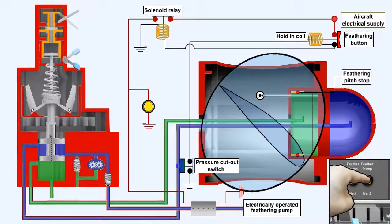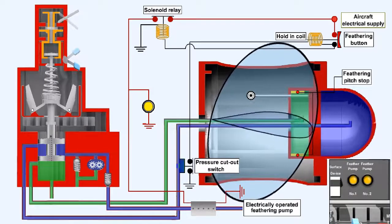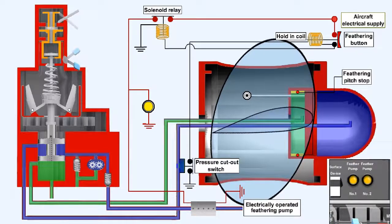The feathering button in the cockpit is pushed in, energizing the feathering pump solenoid relay to supply the feathering pump. It also energizes the hold-in coil, which keeps the feathering button depressed for the time being. Feathering oil now passes through the ports of the landed valve, pushing the pitch change piston so that it moves into contact with the feathering stop.